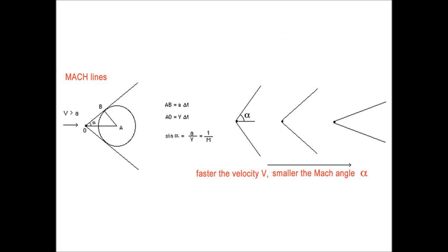Here you have the classical pattern of the Mach lines, which are real when the flow is in supersonic condition. And from left to right, you see how these Mach lines change. The faster the velocity, the smaller is the Mach angle alpha. Well, all these things are well known.